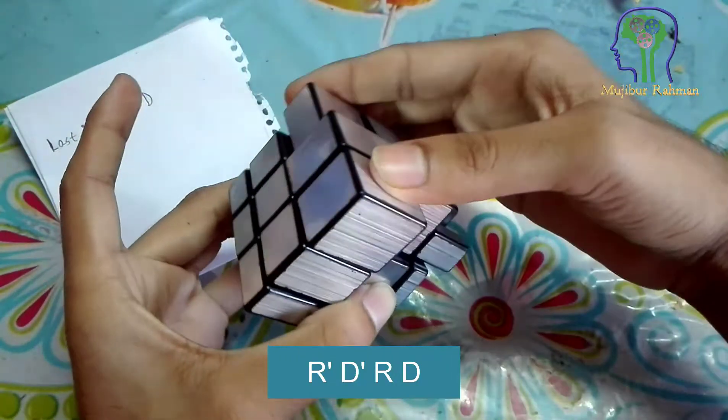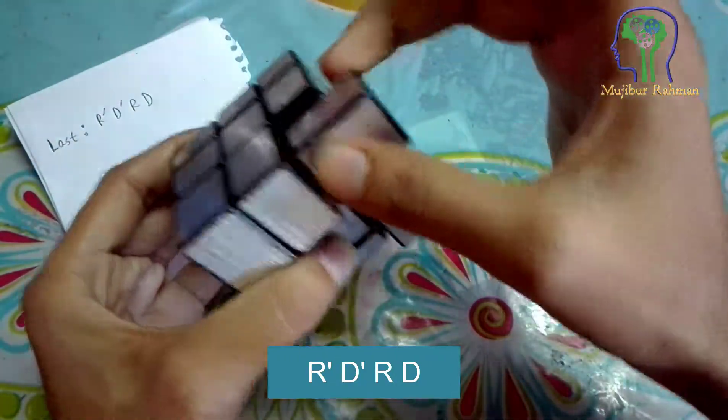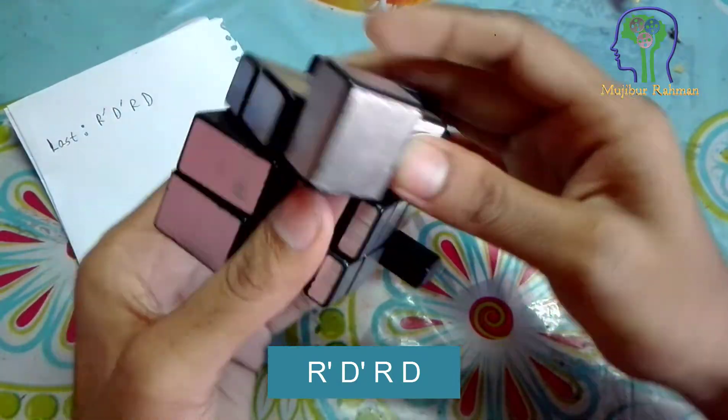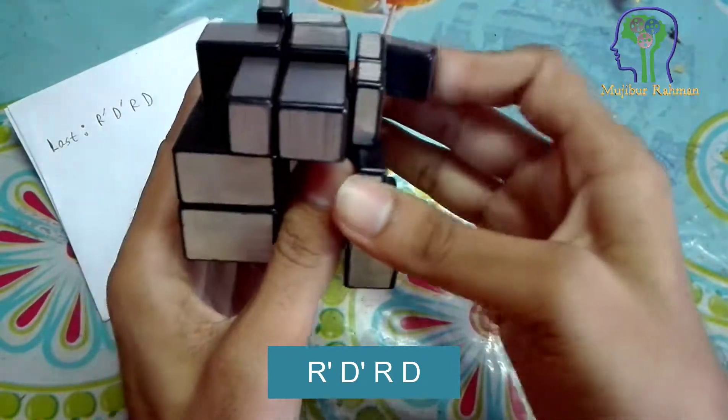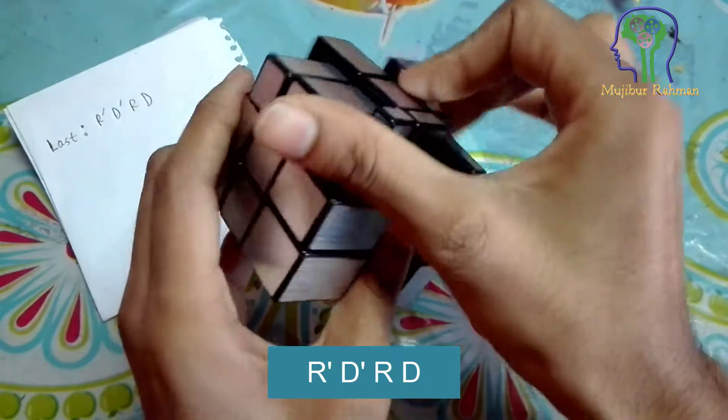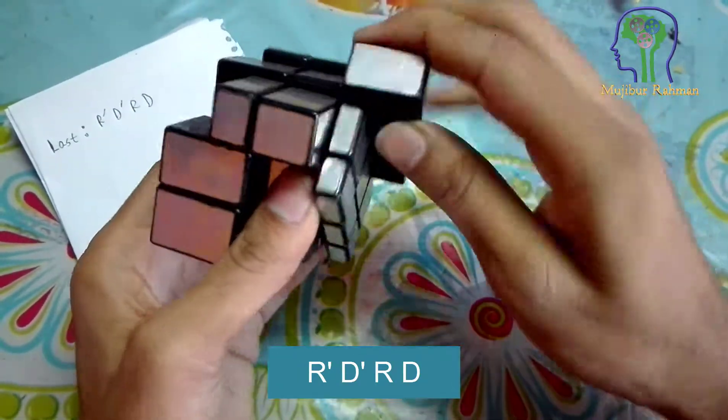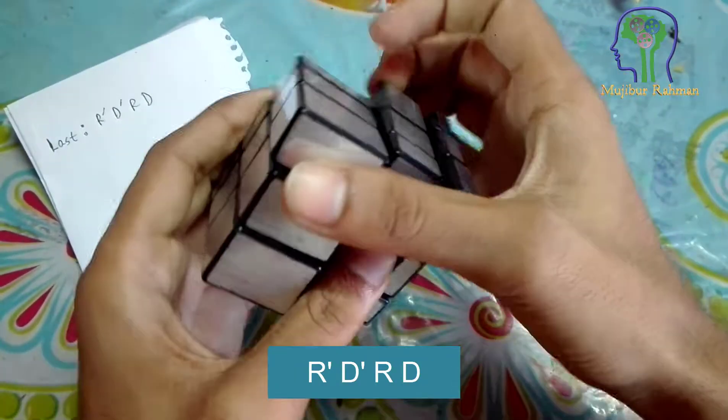So I'm going to rotate this area. The algorithm is: R', B', R', B', R', B' R', D'.